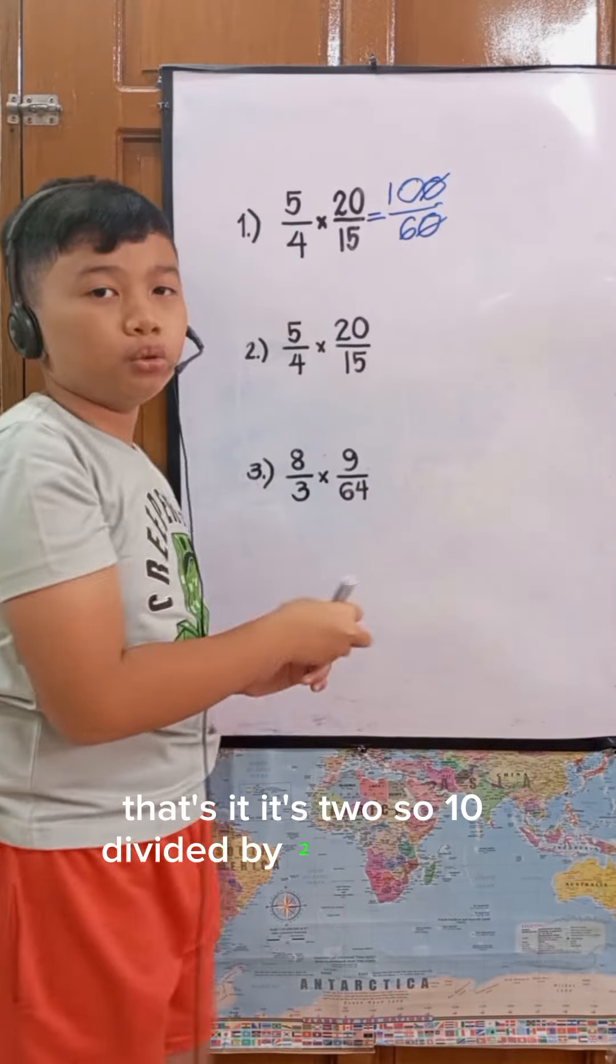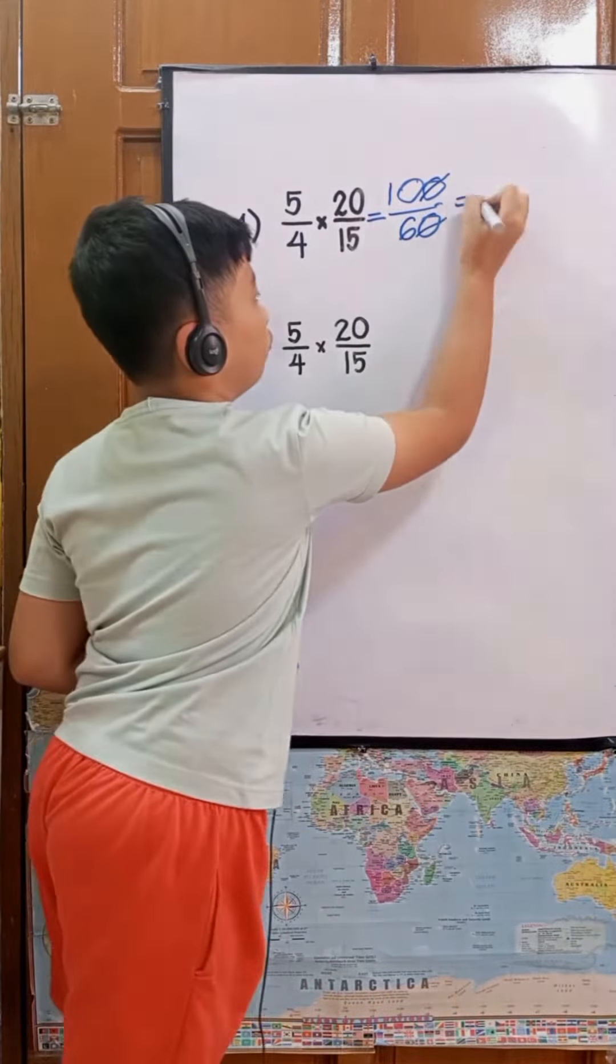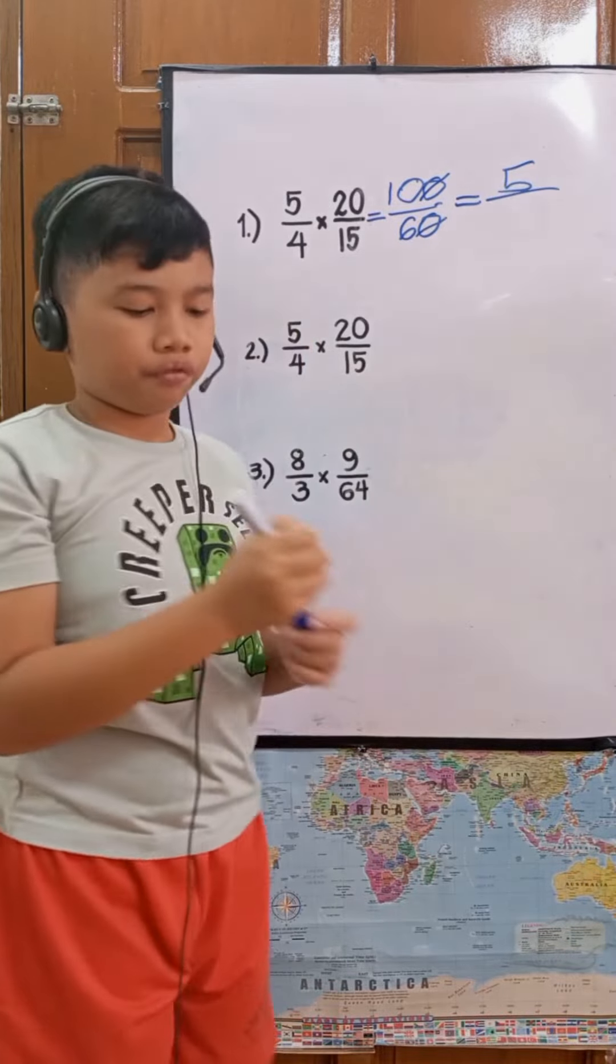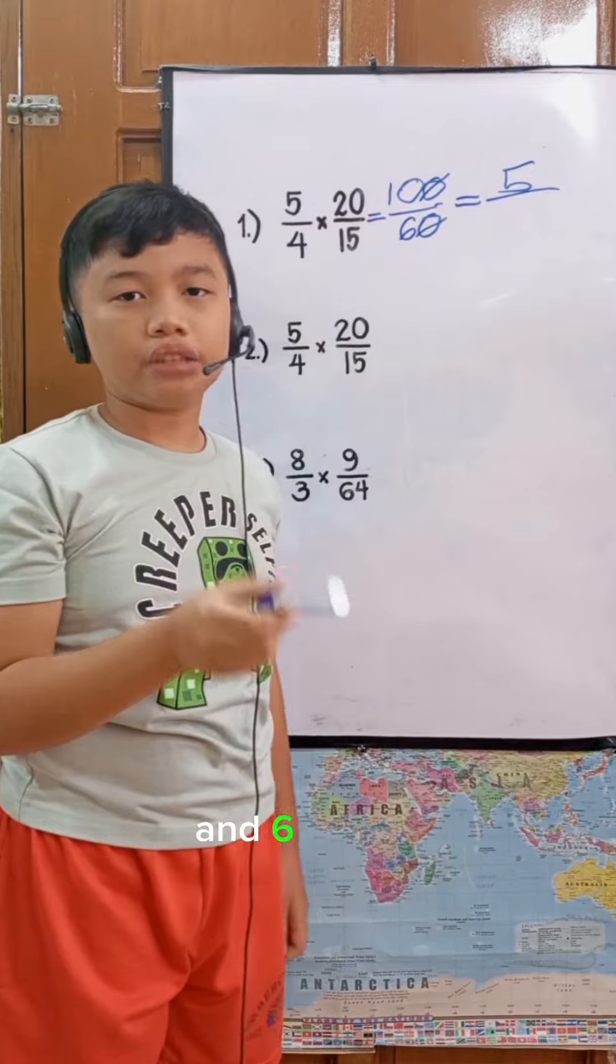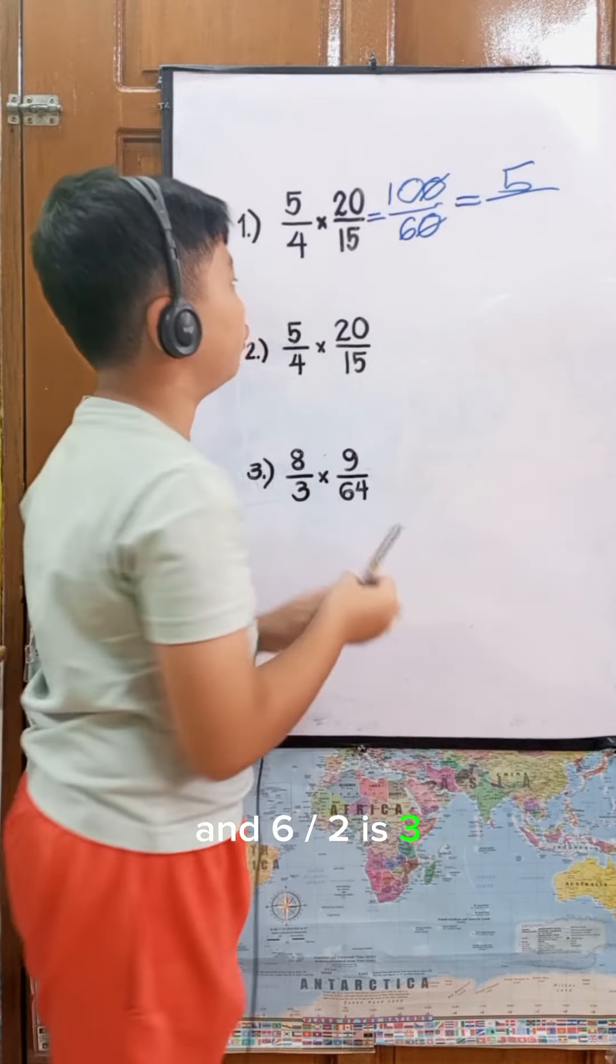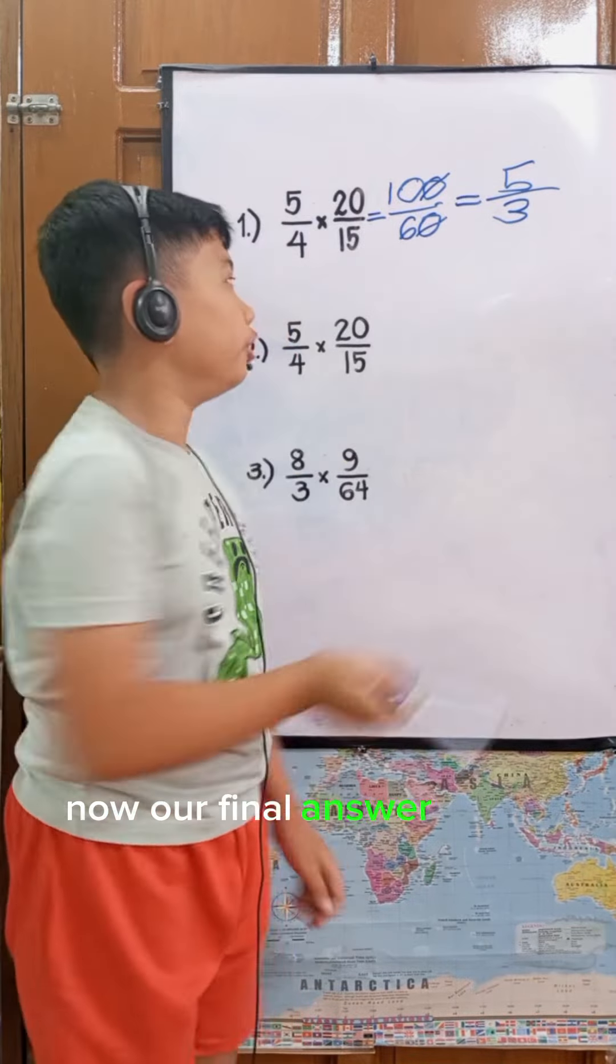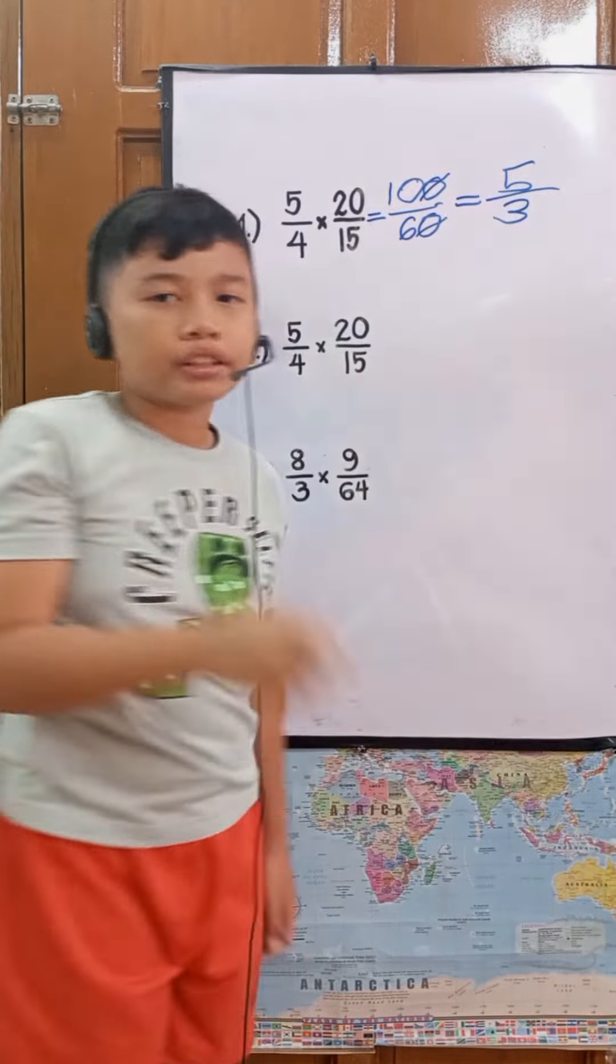So 10 divided by 2 equals 5, and 6 divided by 2 is 3. Now our final answer is 5 over 3.